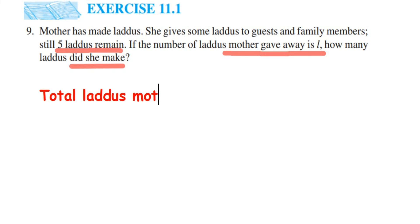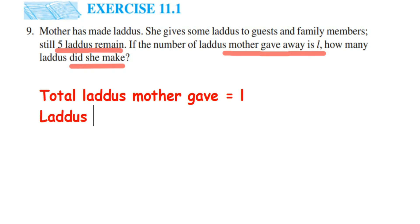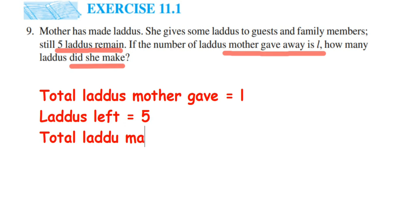Let us write down the answer in statements. Total laddos mother gave is l. After giving away, still five laddos are left, so laddos left equals five. The question is how many laddos she made, so l plus five laddos will be the total number of laddos. Total laddos made by mother will be l plus five.